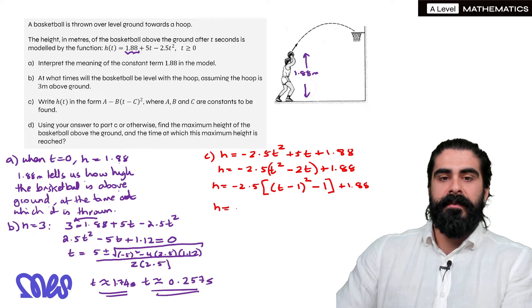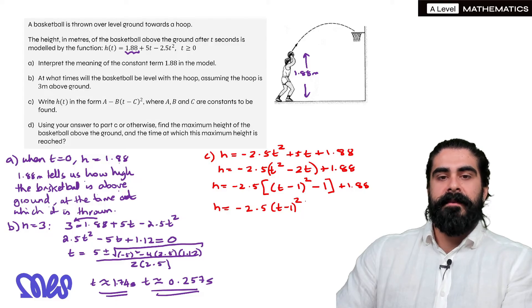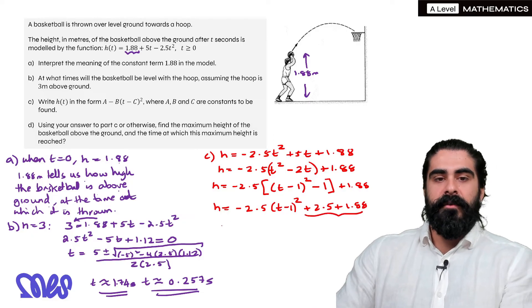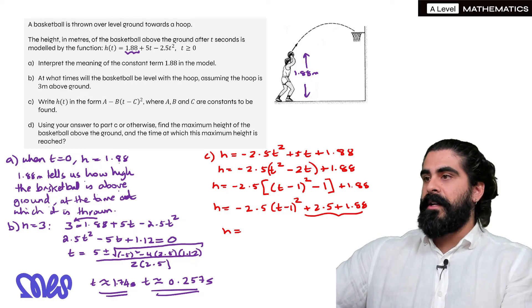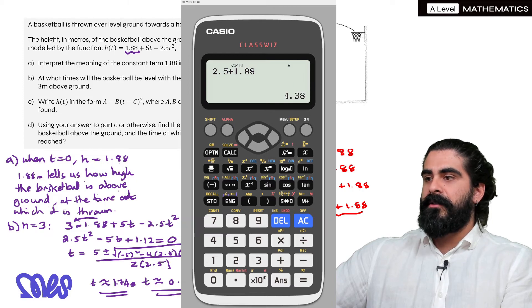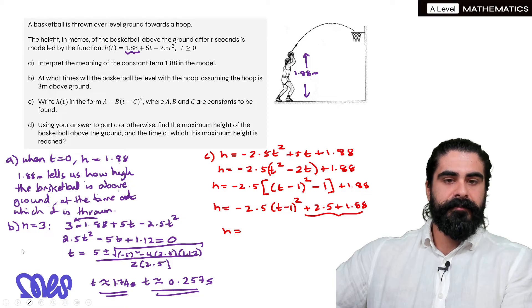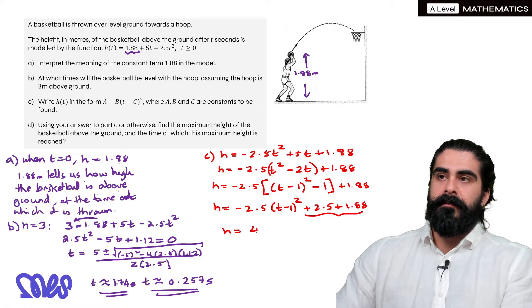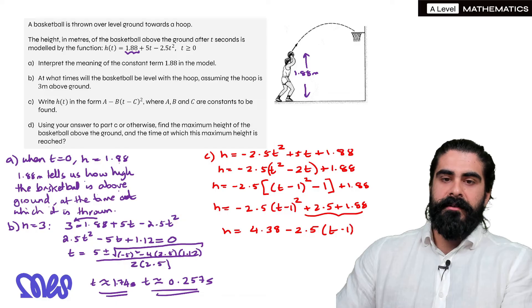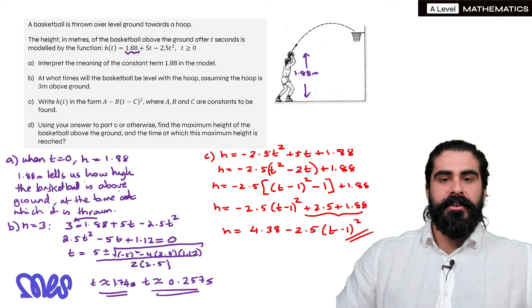Then we multiply in the minus 2.5. So we get minus 2.5 lots of t minus 1 squared. Minus 2.5 times minus 1 is plus 2.5, then we have plus 1.88. Now we want to write that first based on their form. So we've got 2.5 plus 1.88, so 4.38. Then we have minus 2.5 bracket t minus 1 squared. Okay, that's our solution. So a in this case is 4.38, b is 2.5, and c is 1.